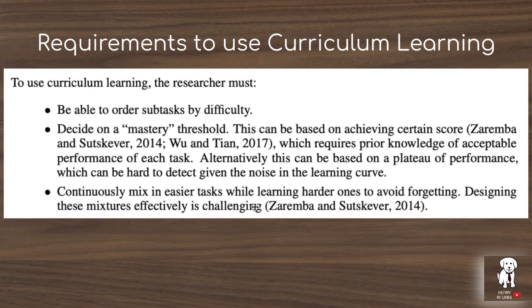The third requirement is the challenge of continuously mixing in the easier tasks while learning the hard ones. Neural networks have something called catastrophic forgetting: if you go from one-digit addition up to five-digit addition, the network may have forgotten how to do two or three-digit addition along the way. So you have to continuously mix in the easier tasks while learning the harder ones.